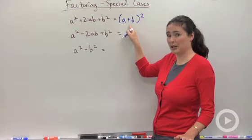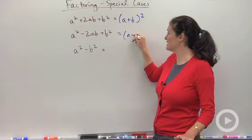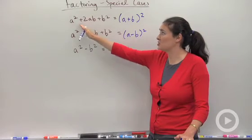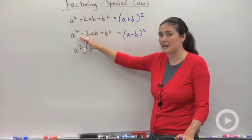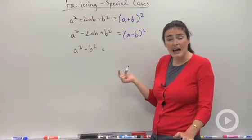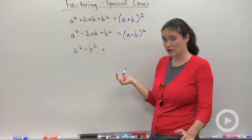That guy's a plus b squared, and this guy's a minus b squared. Notice the only difference in the trinomial is that plus or minus sign there. Same thing here. The only difference is the plus or minus sign. Again, those are called perfect square trinomials.